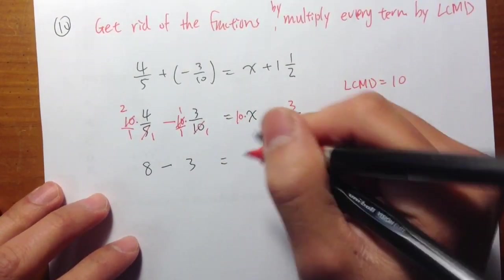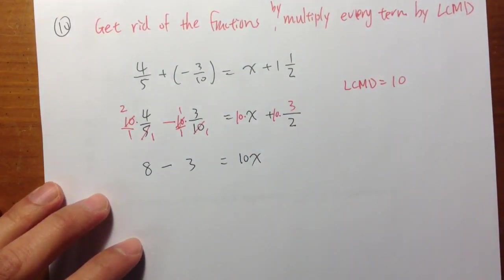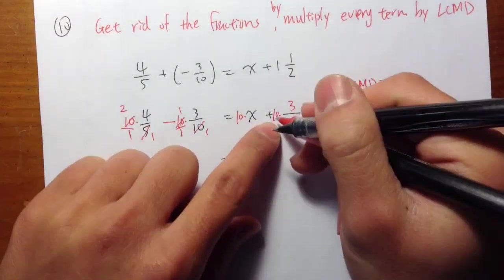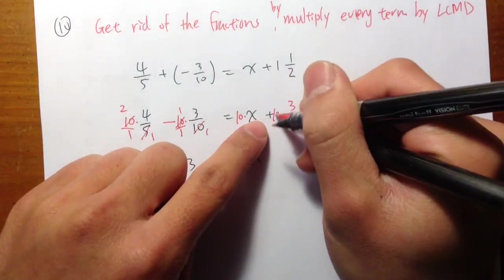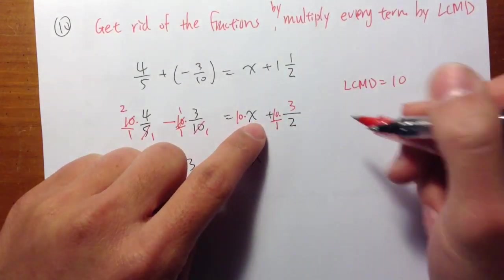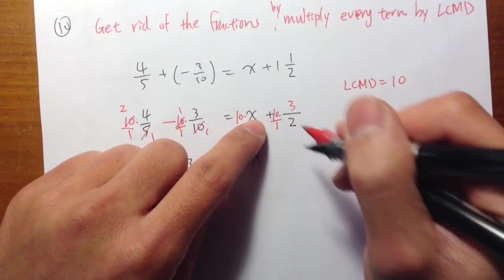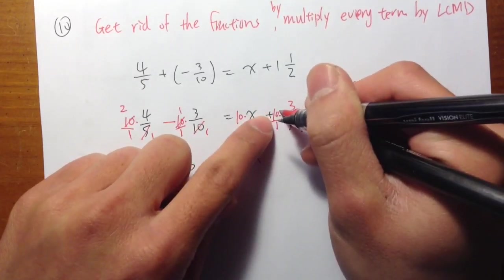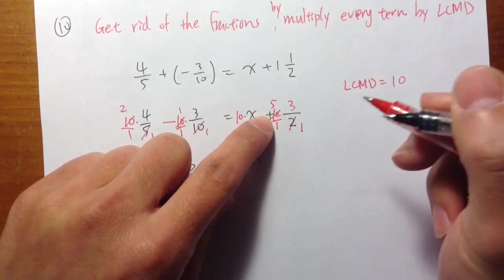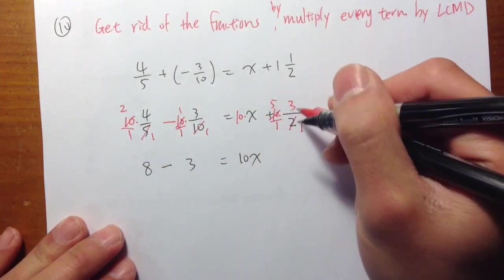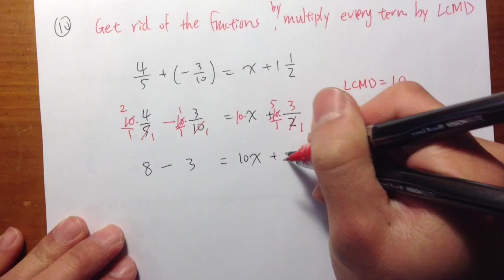Equals to 10 times x, which is 10x. And then 10 times 3 over 2. Let me write 10 as 10 over 1. And then cross-cancel first. 2 goes into 2 once. 2 goes into this 10 5 times. 5 times 3 is equal to 15, plus 15.